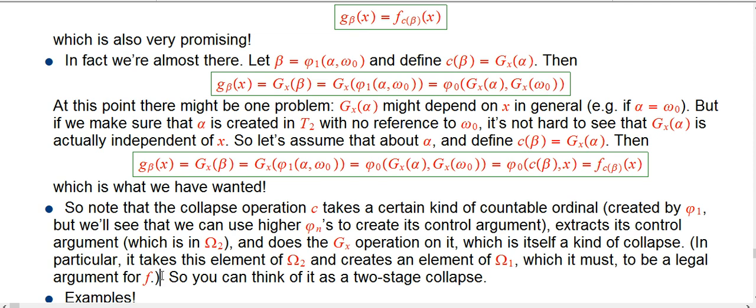So, I'm not sure if it's super useful. You can think of it as a two-stage process. You extract it out of its phi1 context. You take beta and you think of it as being created as phi1 of alpha comma omega naught. You extract the alpha, and then you take that, which is in big omega 2. That's not the kind of argument-object we want. But then you do the gx operation on it, and you get what you want. Yay!